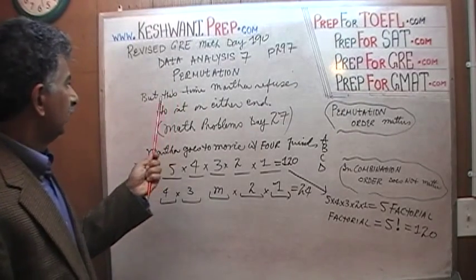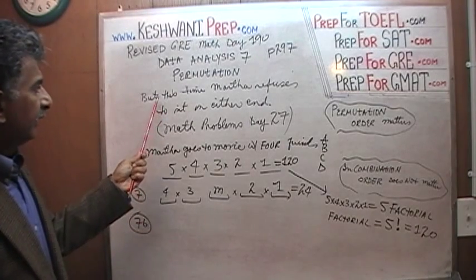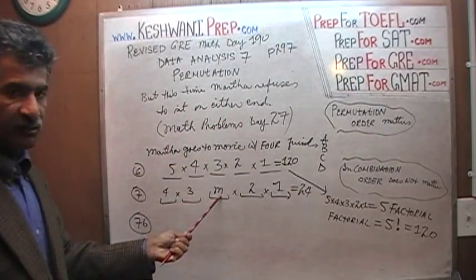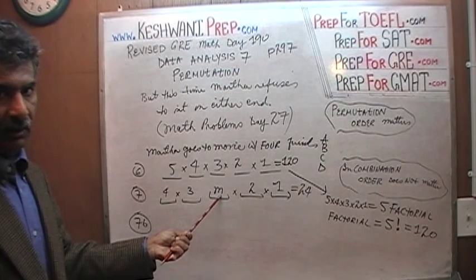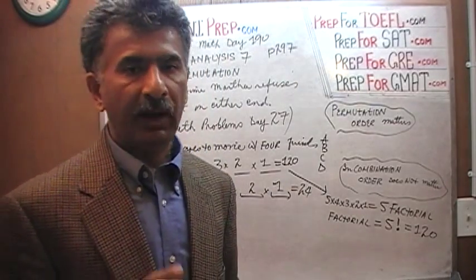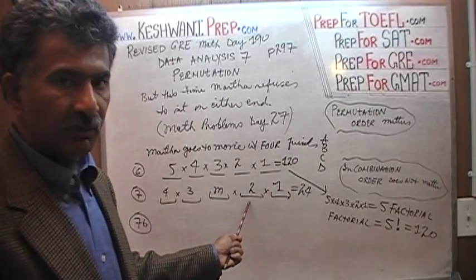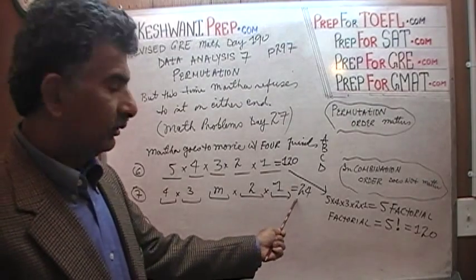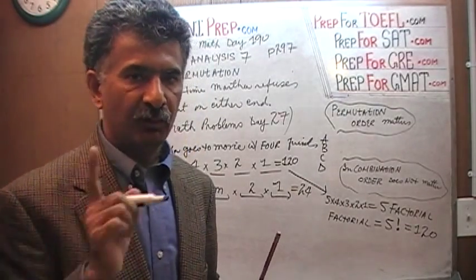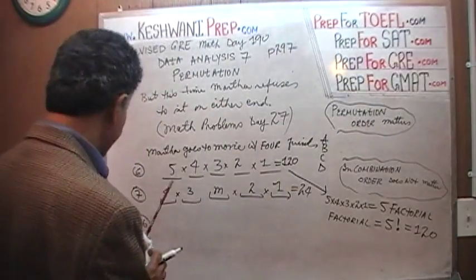Today we are doing this problem. This time in this scenario, this is a continuation of 7. Martha goes to movies again but this time she refuses to sit on either end. She wants friends on either end so that she can yap freely left and right. She wants to be able to talk to both people on either of her left hand side and right hand side. So how many different ways are there? Let's find out.